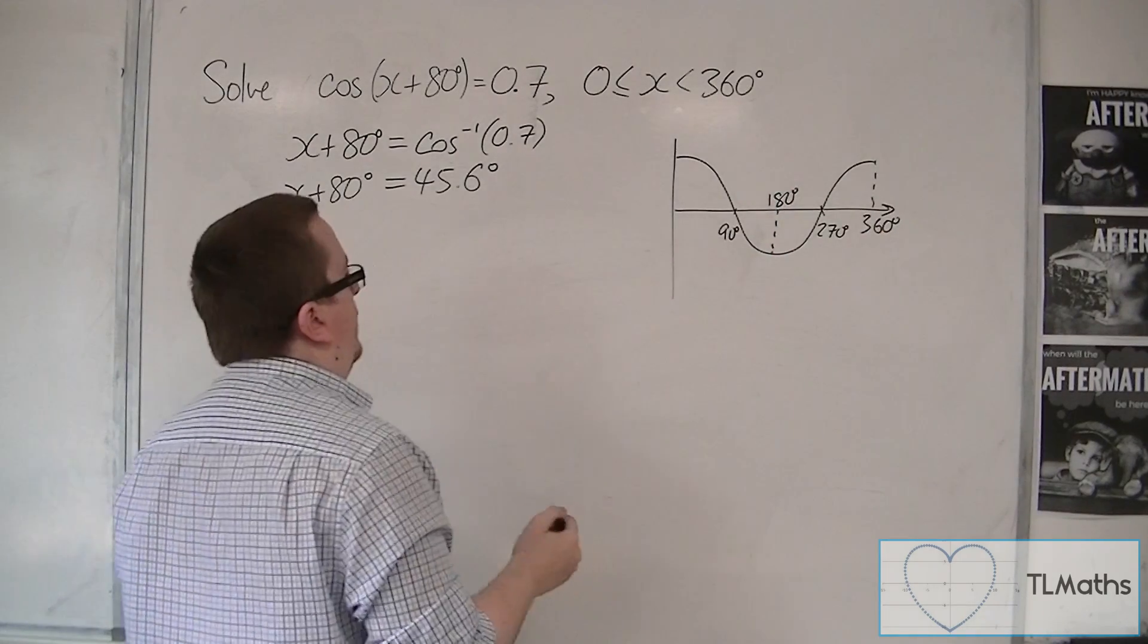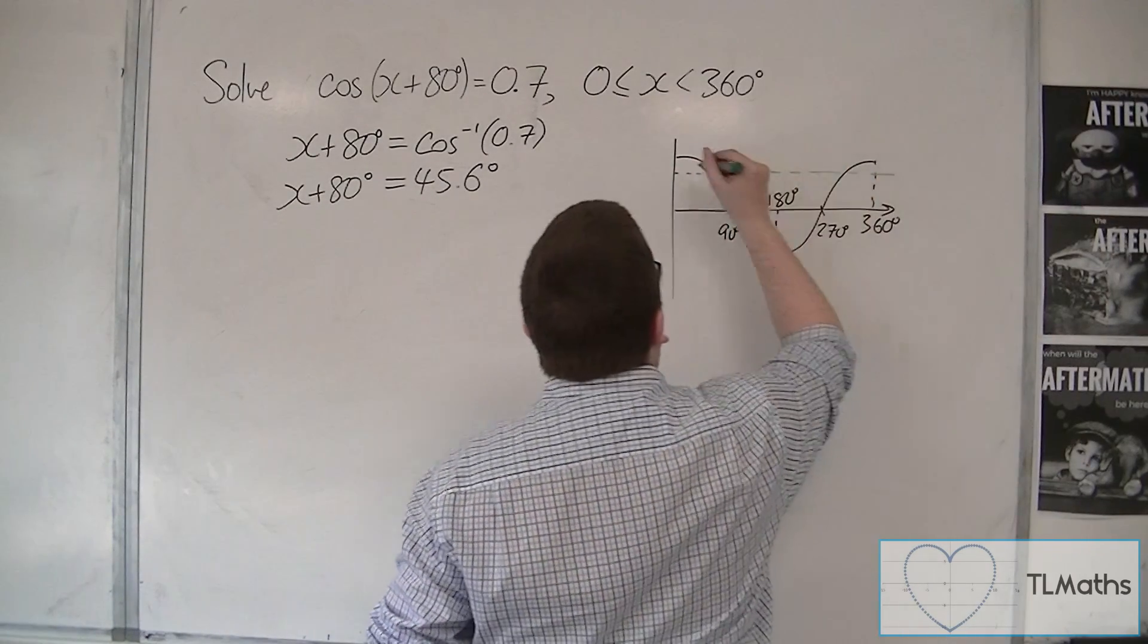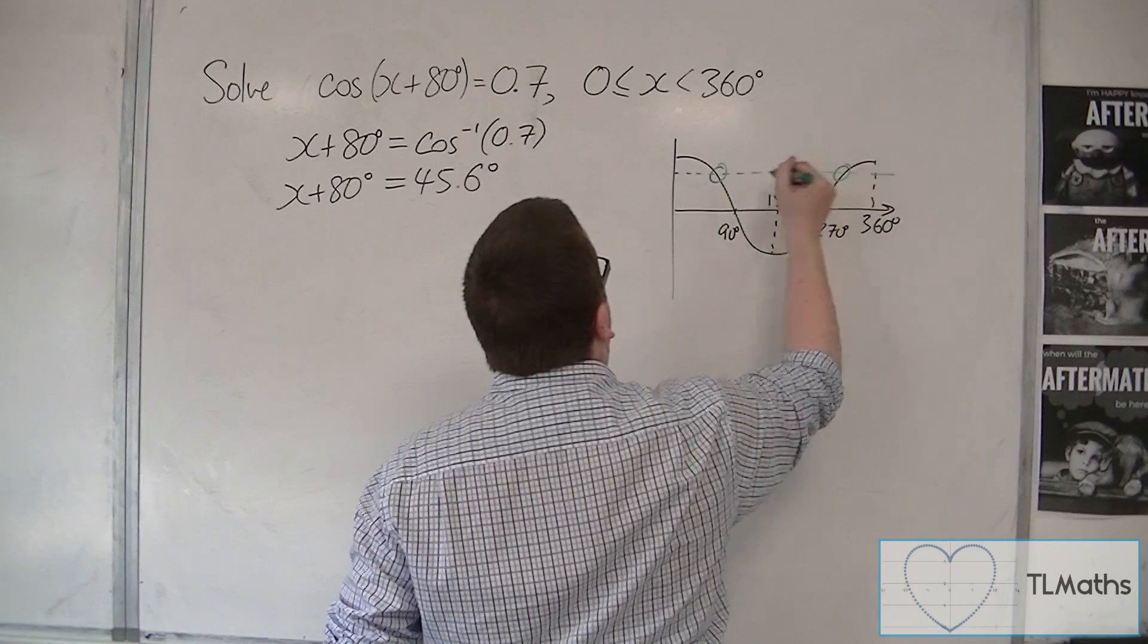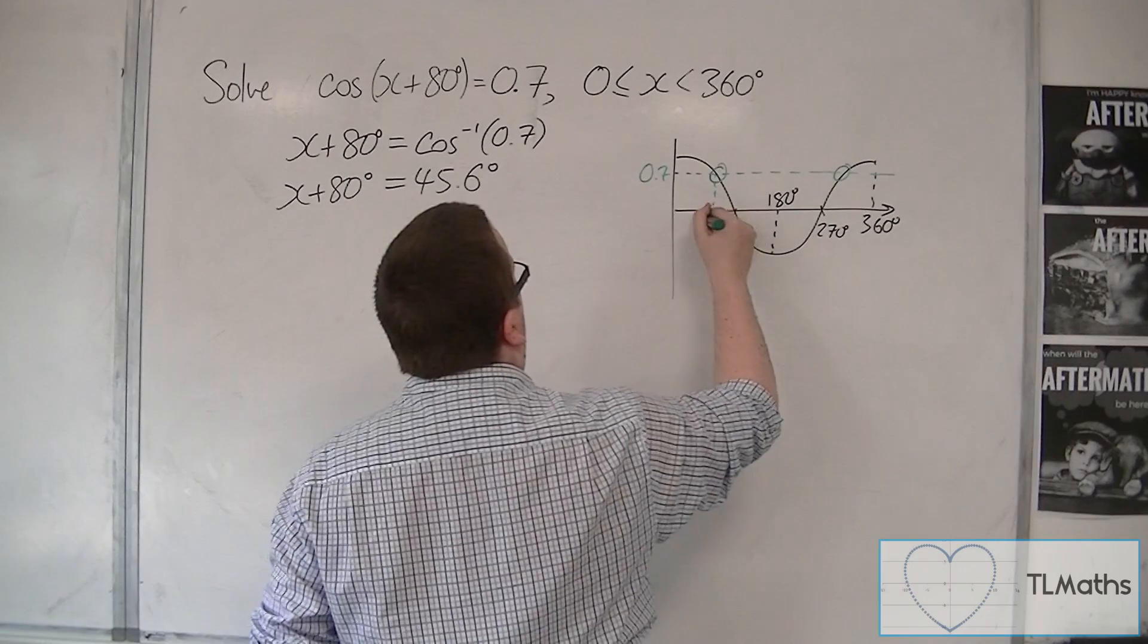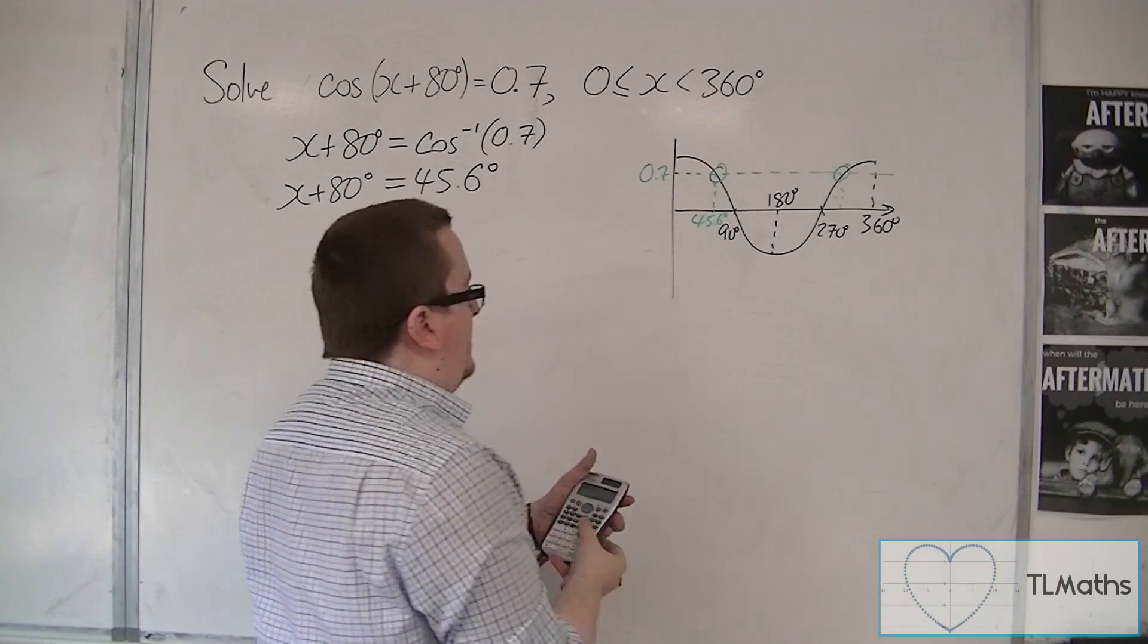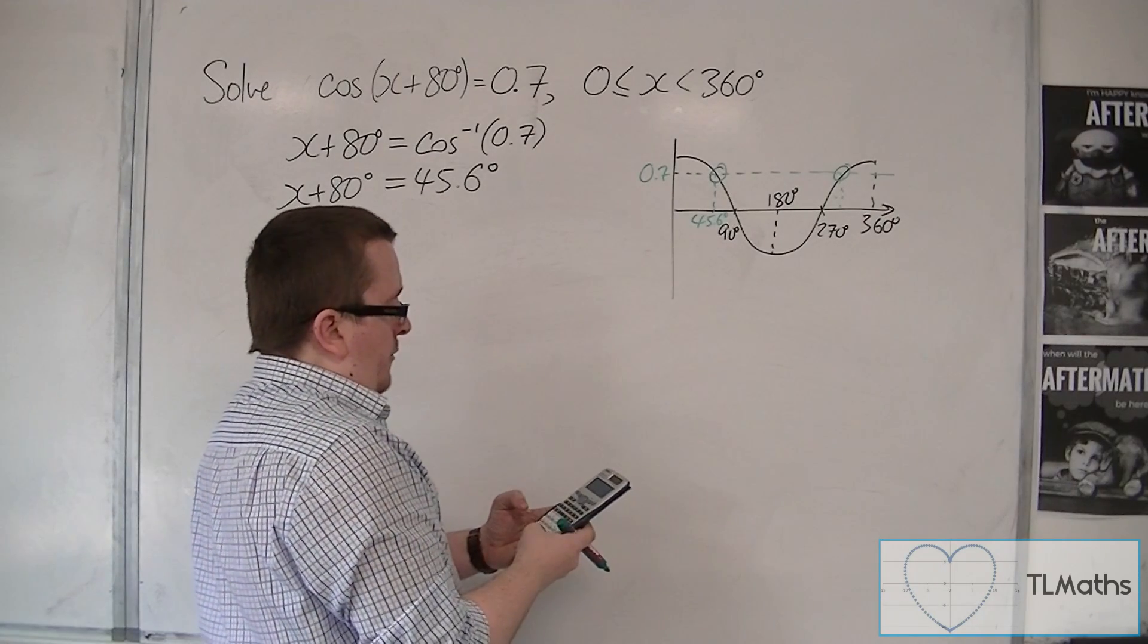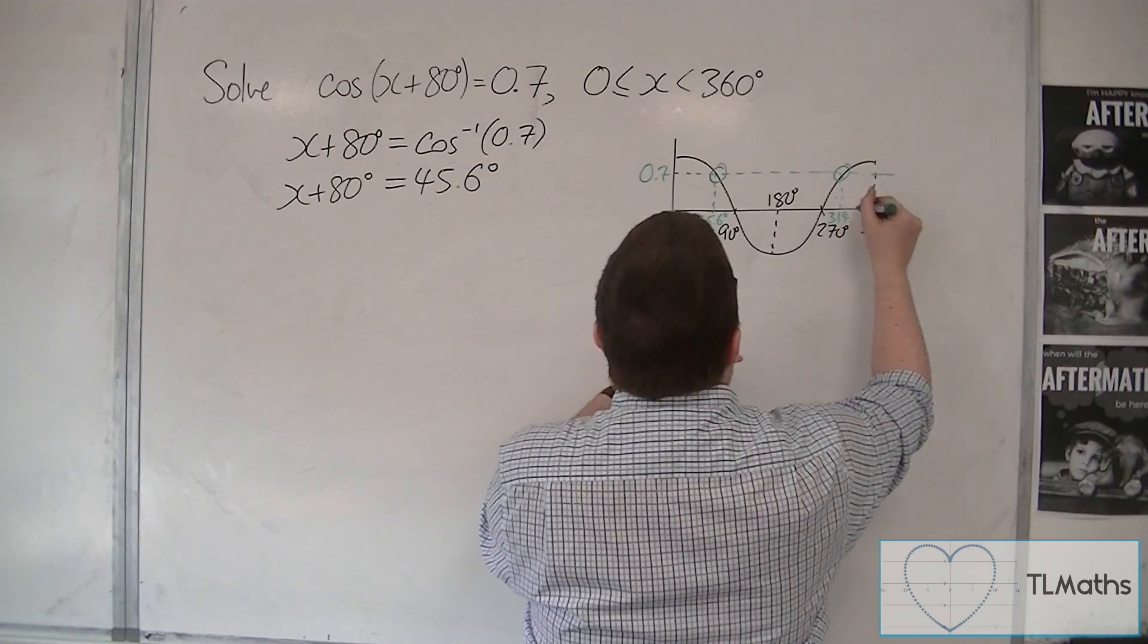So 0.7 is there. We've got two solutions. The first one is this 45.6, and the second one can be found by doing 360 take away 45.6, which is 314.4.